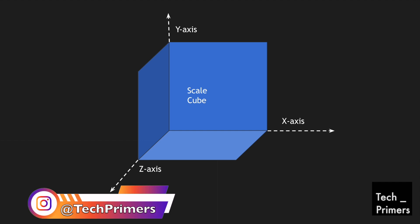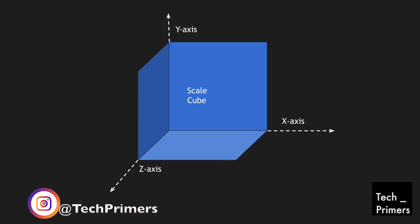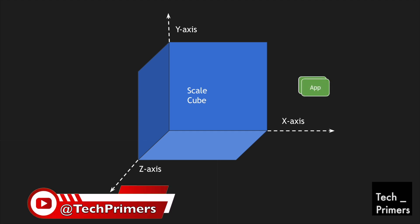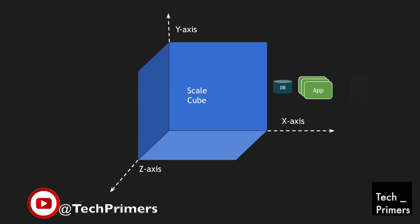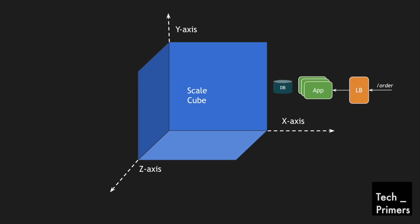Let's look at the x-axis. Generally when somebody says scalability, what we tend to do is scale our application into multiple instances, back that with a load balancer, and the application generally connects to a single database. Here I'm taking an example of an application which has an endpoint called 'order'. We have a load balancer, it connects to the application, and the application connects to a single database. This kind of scalability is pretty common because we can easily spin up one more instance and handle more traffic, all controlled by the load balancer.